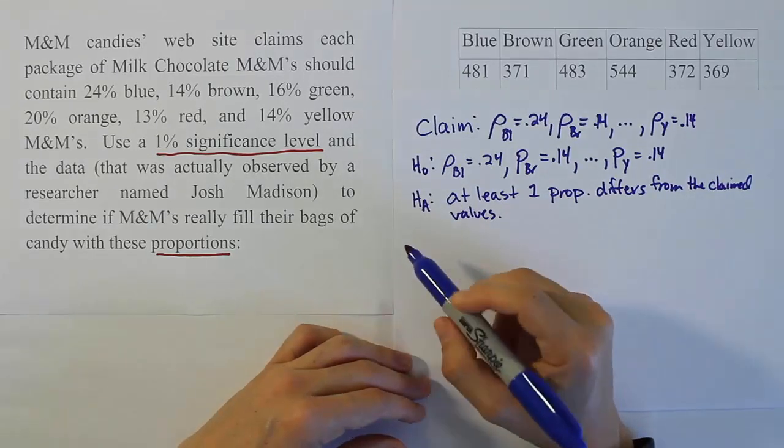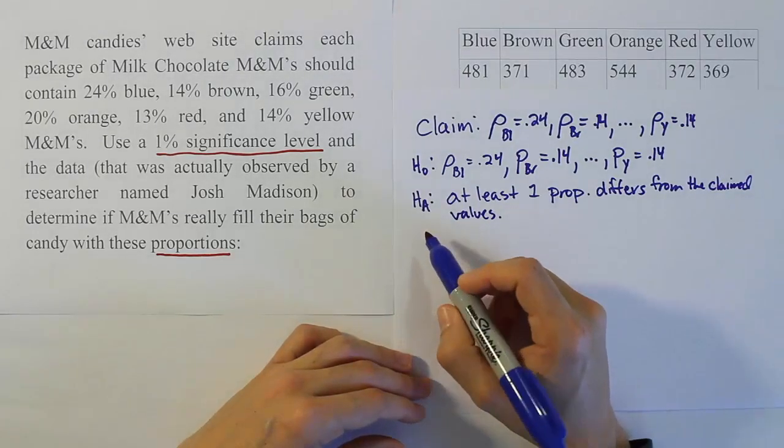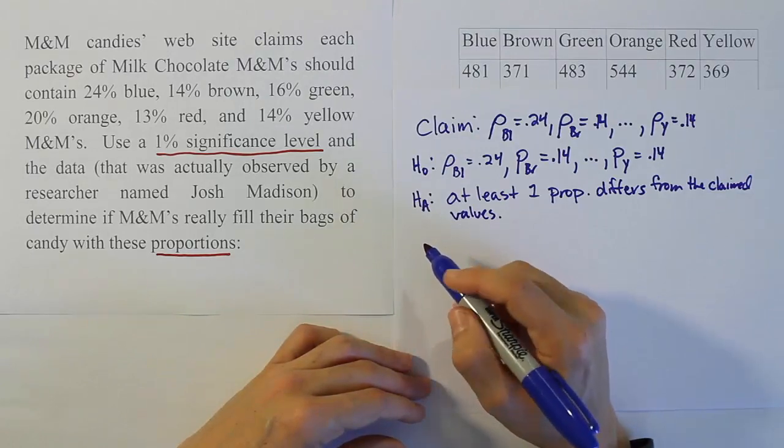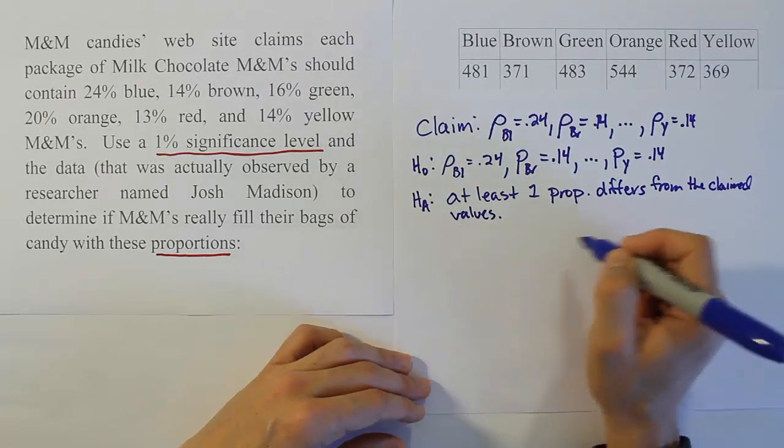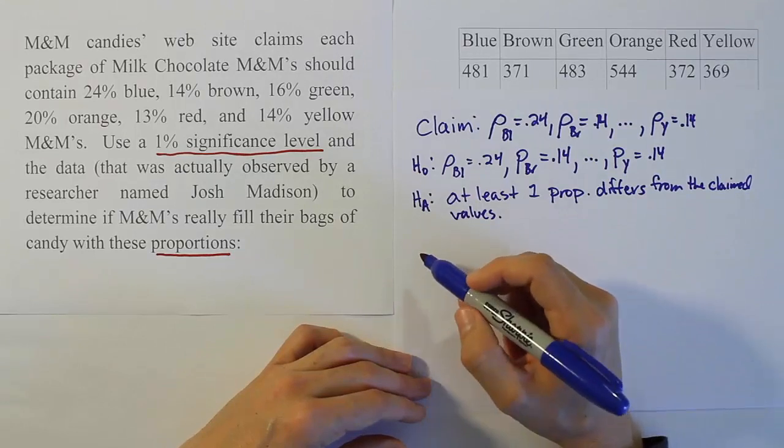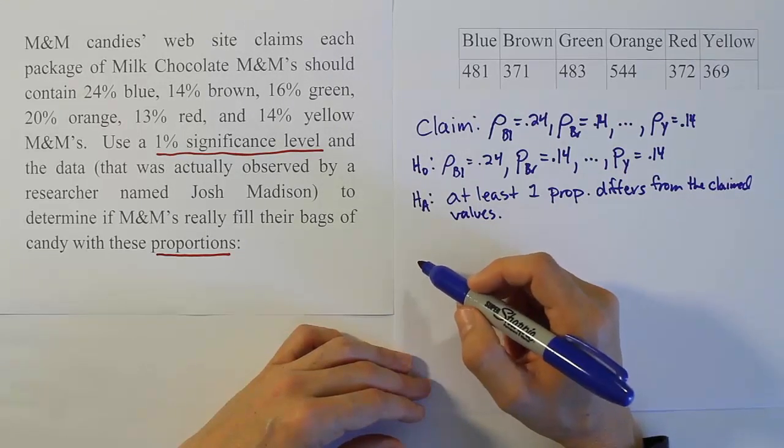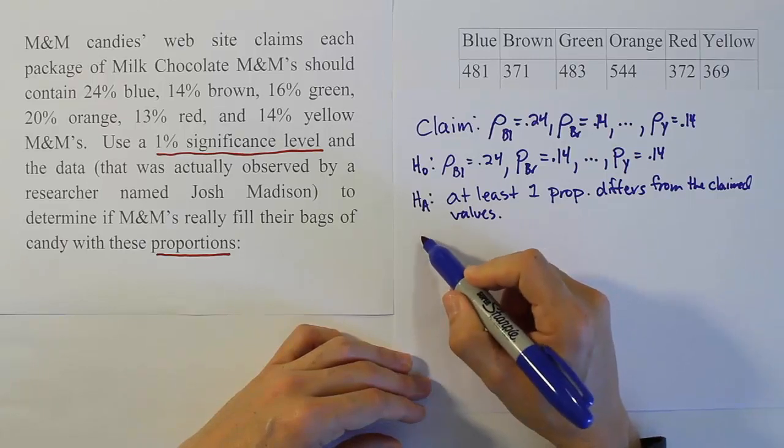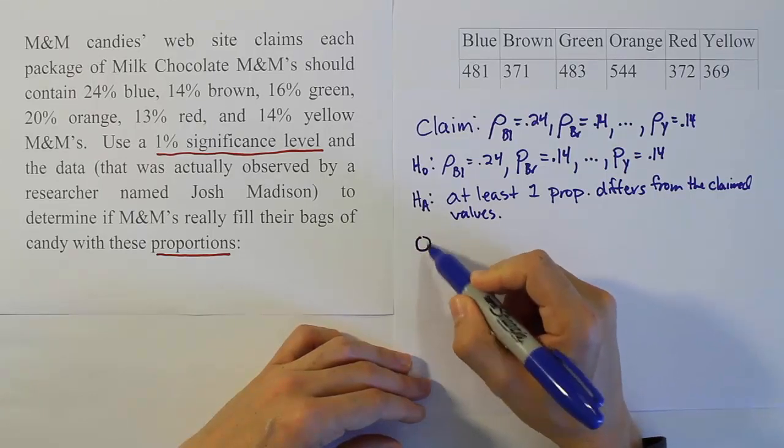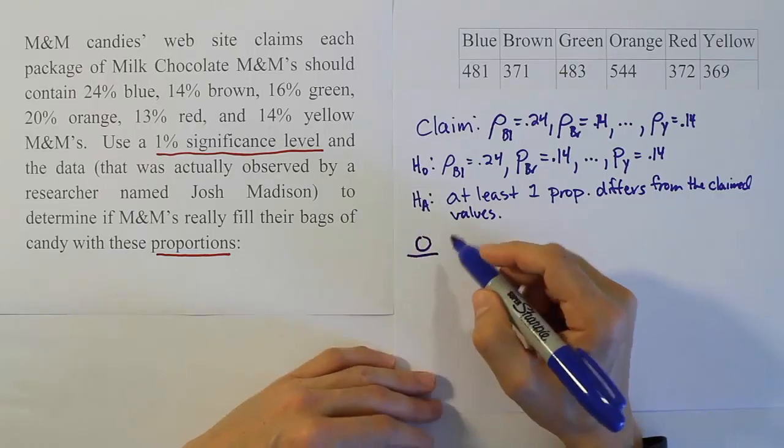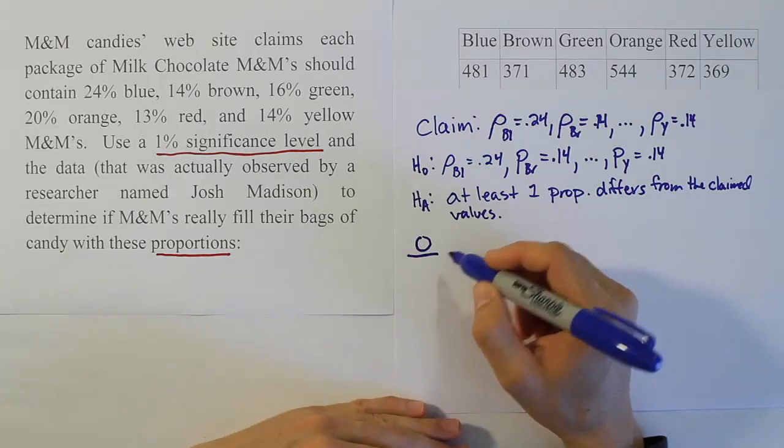Our next step is the data step, which is quite involved. It's the step we use to evaluate all the stuff for the test statistic. The test statistic is simple - we just add up the last column, but getting that last column is the issue.